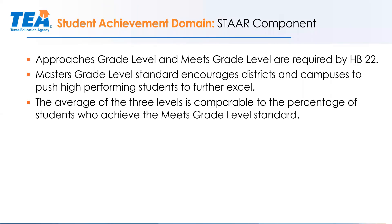In previous accountability systems, we were only concerned with the passing or satisfactory level on STAAR. Our new accountability system, as required by House Bill 22, looks at performance at the approaches grade level and also includes the meets grade level and the masters grade level — because that encourages districts and campuses to push high-performing students to further excel. What we do is average these three levels of performance, and that level is comparable to the percentage of students who achieve the meets grade level standard.